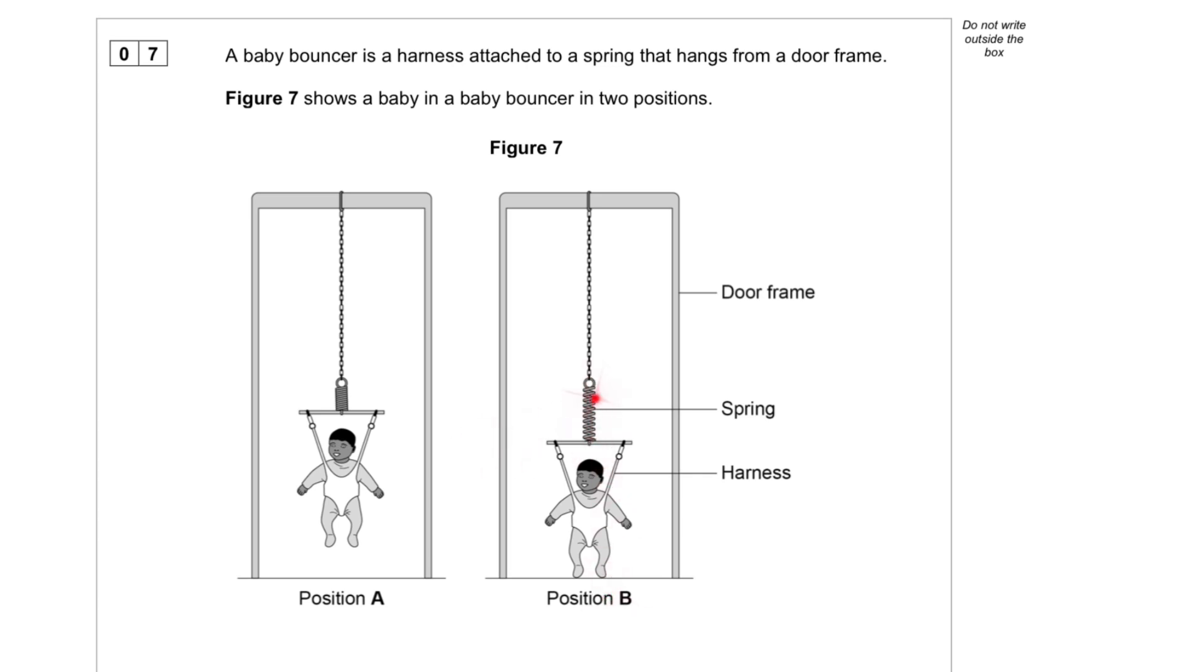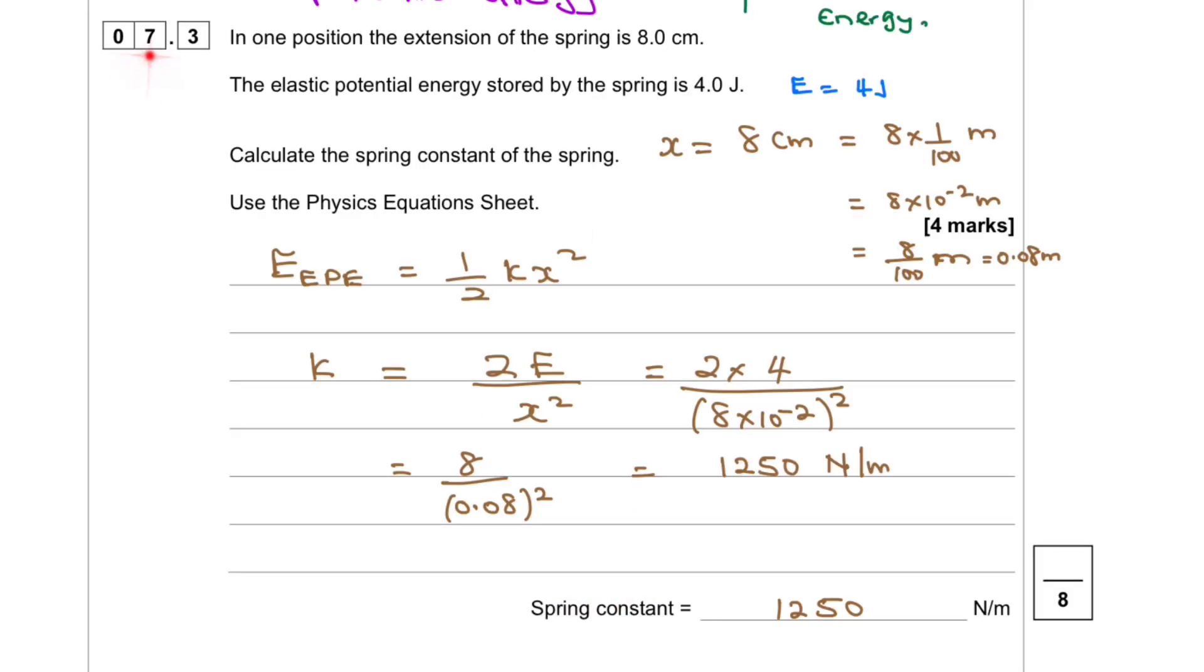At B, all the energy is elastic potential energy because the spring extended. As you can see at B, the spring has extended.